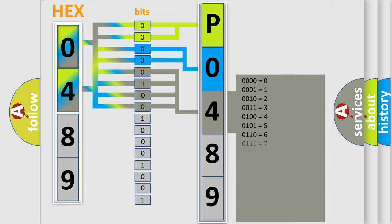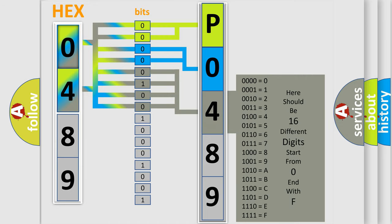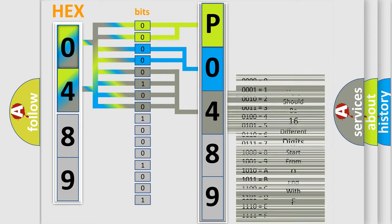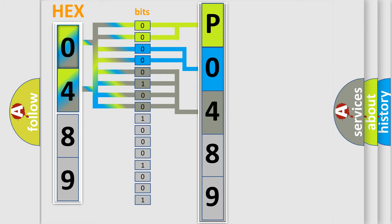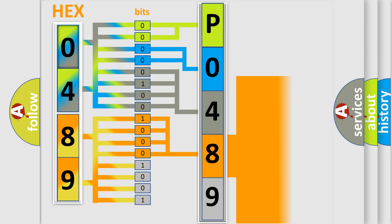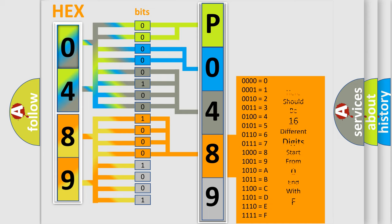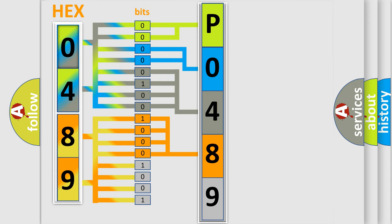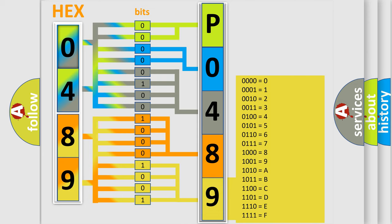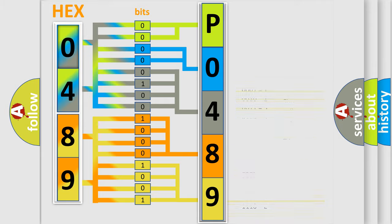The second byte is composed of a combination of eight bits. The first four bits determine the fourth character of the code, and the combination of the last four bits defines the fifth character. A single byte conceals 256 possible combinations. We now know in what way the diagnostic tool translates the received information into a more comprehensible format.